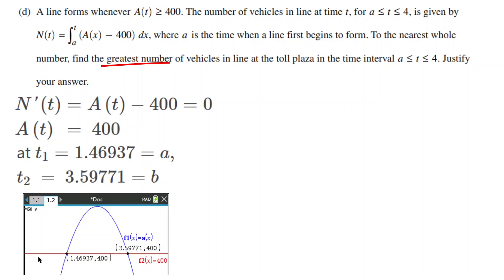To find the absolute max, we also have to test the bounds of the interval, which are a and 4. a happens to be equal to t1 since t1 is the first time A(t) is greater than or equal to 400.